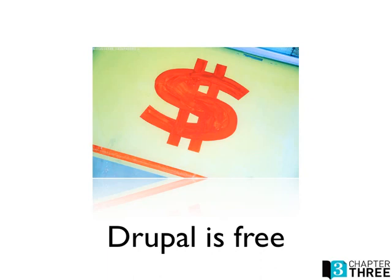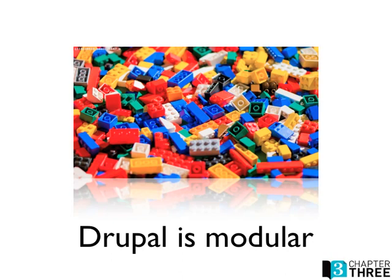Drupal is modular. You start right out of the box — you install Drupal and it has some core functionality that can do a lot of stuff. But there are many features you need to add on for very specific use cases. For example, you start with Drupal and can build a blog and a contact form, but what if you need to add a photo gallery or make a very specific RSS feed? That's when you go to Drupal.org — all free modules. You can look through thousands of different modules, download them, put them on your website, configure them, and add functionality step by step.